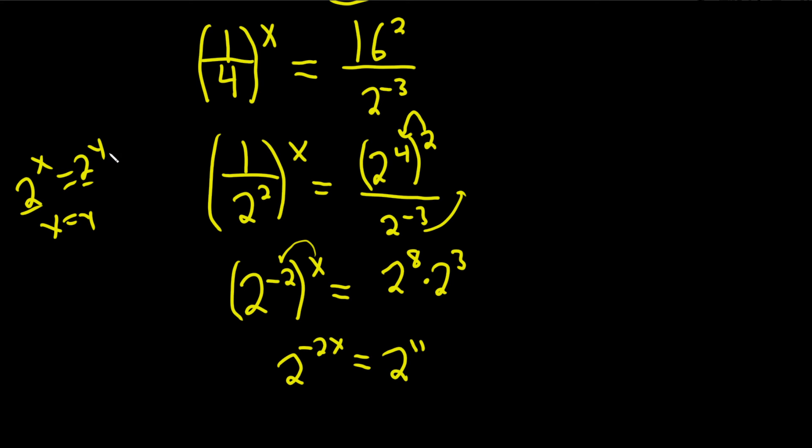And now we're in this position here where we have the same base on both sides. So you can drop the 2s, so you just get negative 2x equals 11. Then just divide by negative 2, so you get x equals negative 11 over 2.